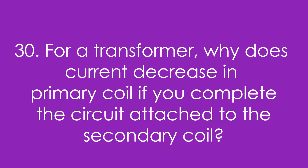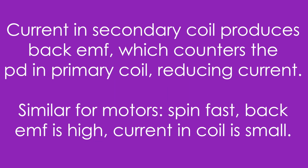Finally, Question 30: Why does current decrease in a primary coil if you complete the circuit attached to the secondary coil? If a current is induced in the secondary coil, it produces a back EMF that opposes the PD in the primary coil, thus reducing the current in it. This is similar for motors — if a motor spins fast, the back EMF is high, meaning the current in the coil is small. That's why stopping a motor causes it to burn out: there's no back EMF to limit the current in the coil.